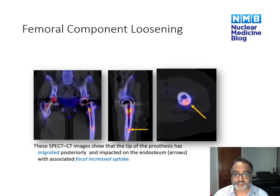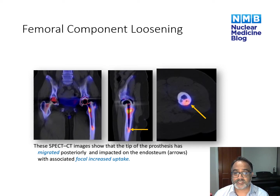In further examples of femoral component loosening, you can see focal increased uptake around the femoral neck and focal intense increased uptake adjacent to the tip of the femoral stem. This is because the tip of the femoral stem has migrated and is now eroding through the endosteal surface, causing increased stress — which is why we see that typical three-point uptake pattern on the bone scan.